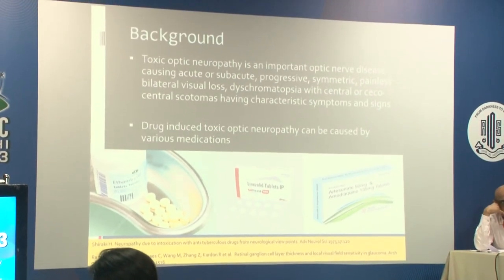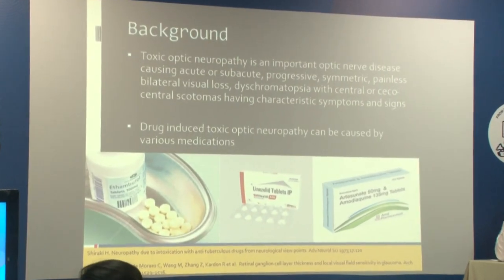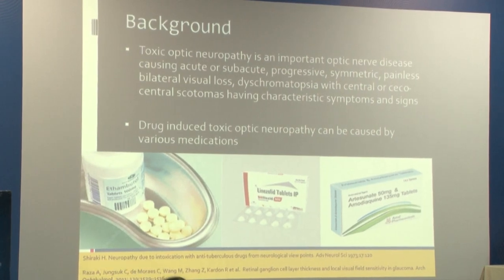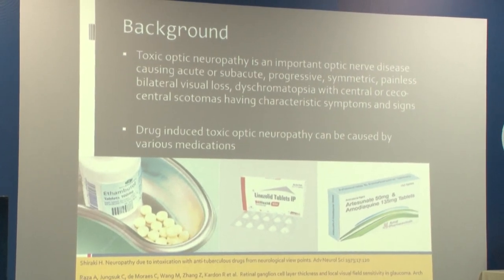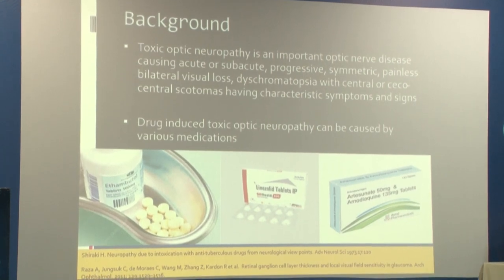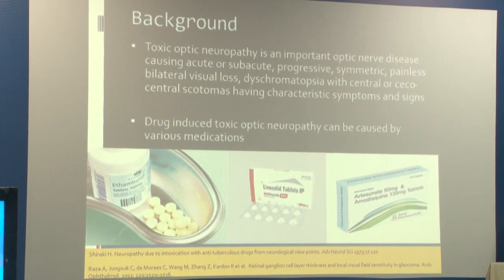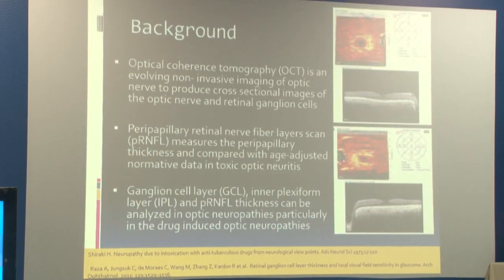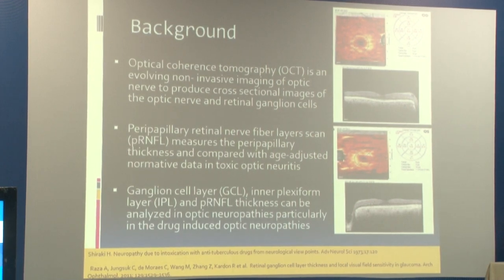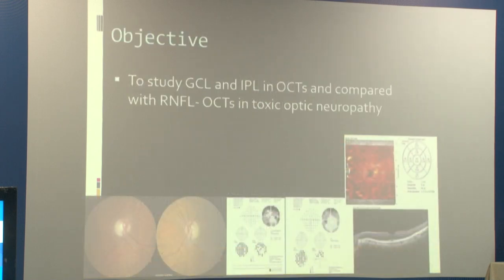Toxic optic neuropathy is an important optic nerve disease causing acute or subacute progressive, symmetric, painless bilateral visual loss followed by dyschromatopsia with central or paracentral scotoma. Drug-induced optic neuropathy can be caused by various medications. Optical coherence tomography is an evolving non-invasive imaging modality of the optic nerve to produce cross-sectional images of the optic nerve and retinal ganglion cells. Peripapillary retinal nerve fiber scans measure peripapillary thickness, and ganglion cell layer and inner plexiform layer thickness were analyzed in the optic neuropathy.